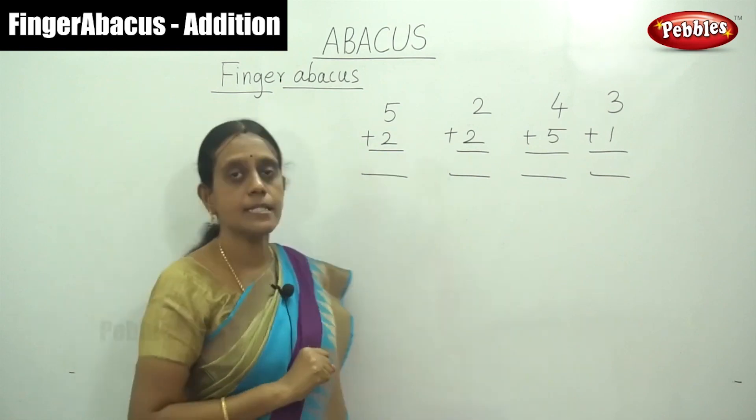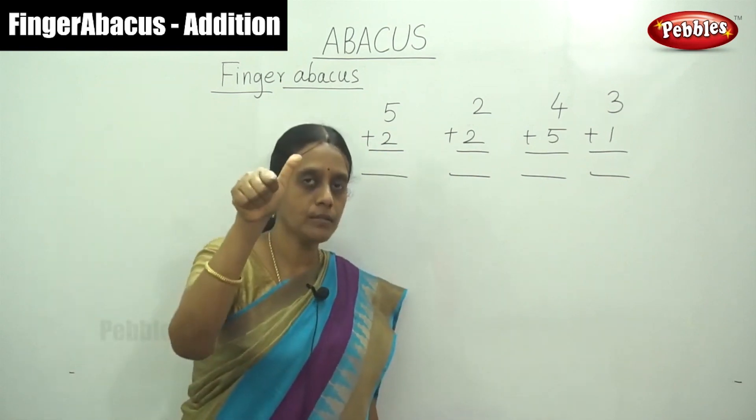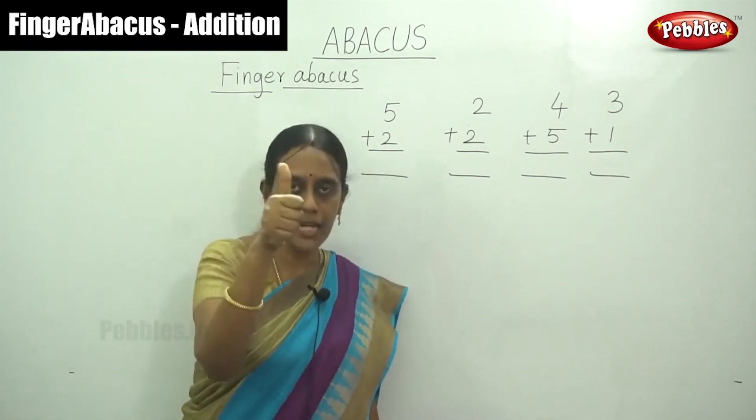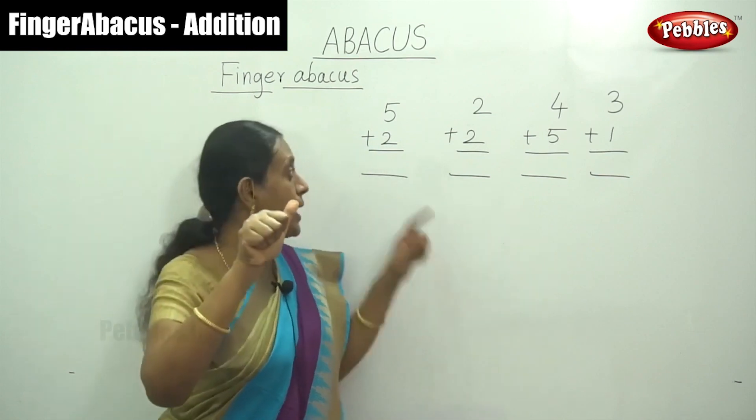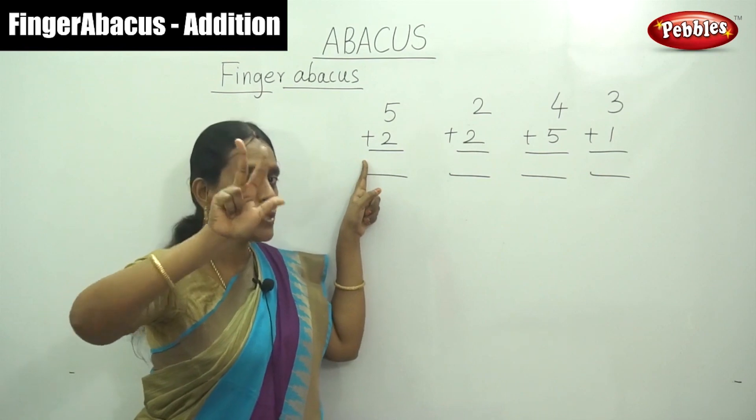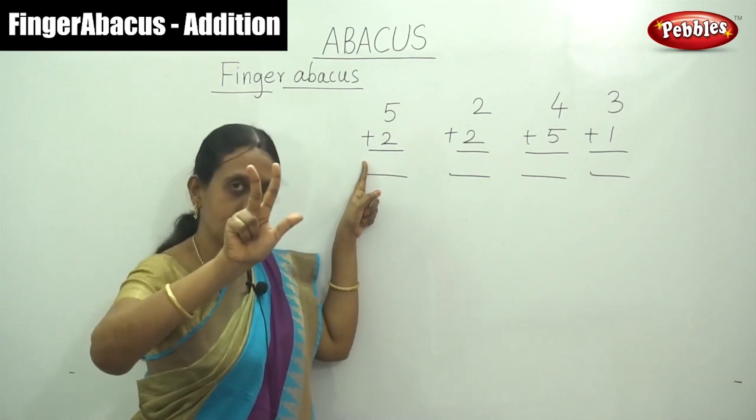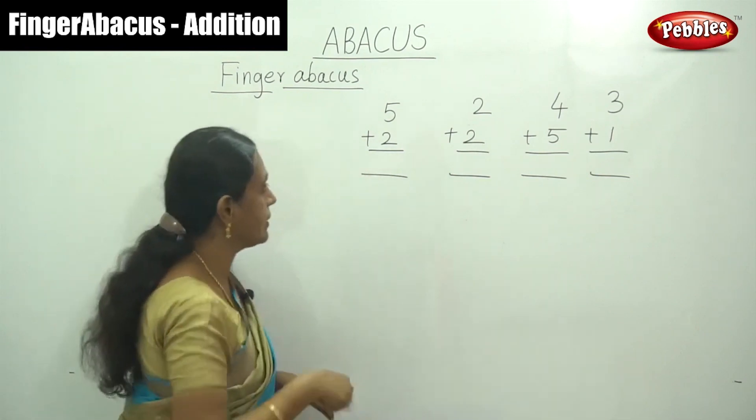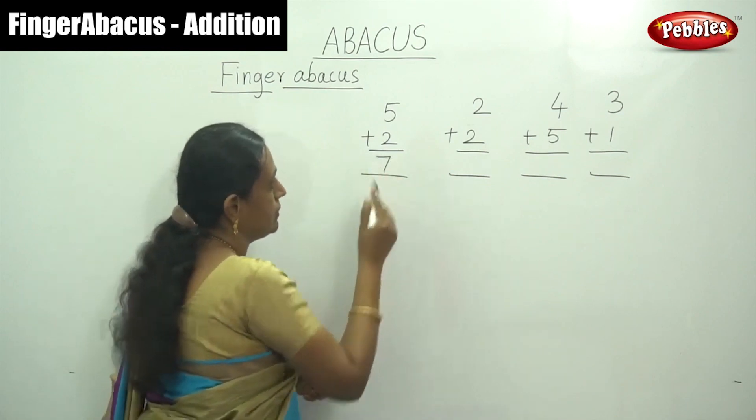First that is 5. Show your thumb finger. This is the value 5. And next number 5 plus 2. So what is the answer? 7.